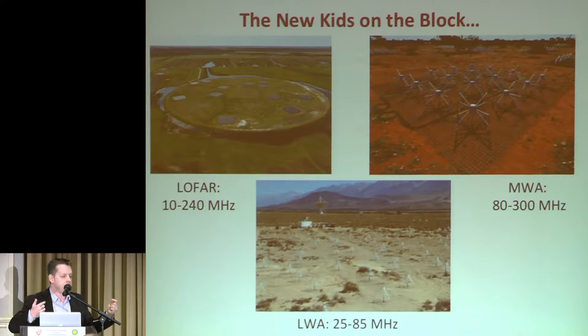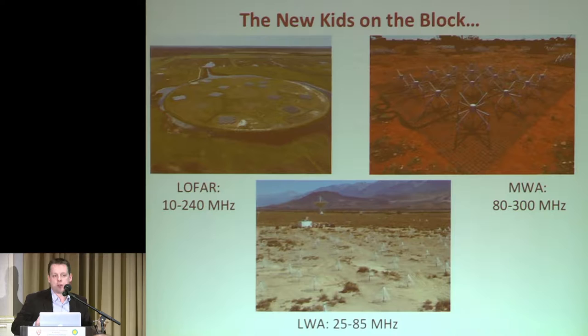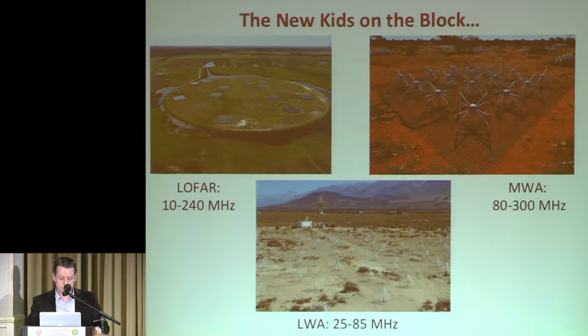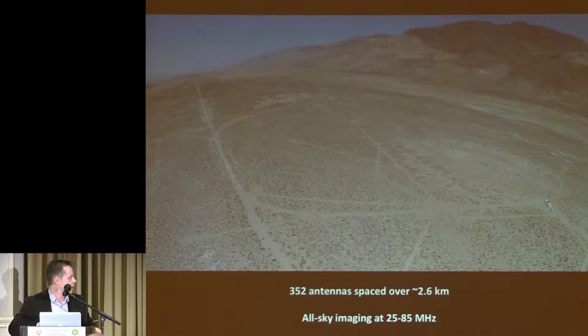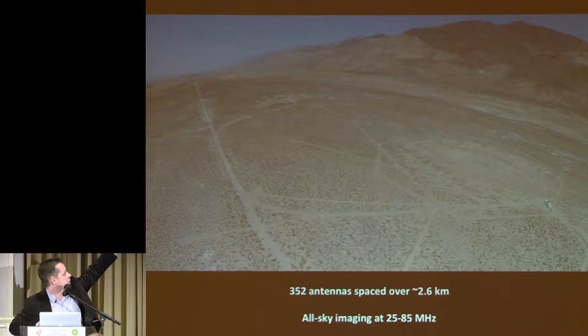Depending on your science, you make various trade-offs in sensitivity, collecting area, and resolution. In our case, we're very focused on detecting transients and doing cosmology at high redshift, where you win by having a large field of view — though the computational cost is very high. The LWA I'm talking about is still under construction. We've built two phases: phase one in 2013–2014, and phase two in 2015. Phase three will finish in 2017. At the end, it will be an array of 352 antennas spaced over about 2.6 kilometers.